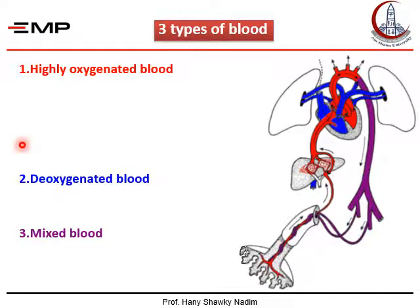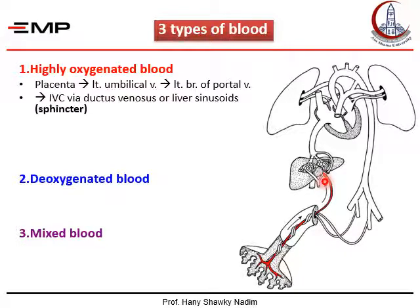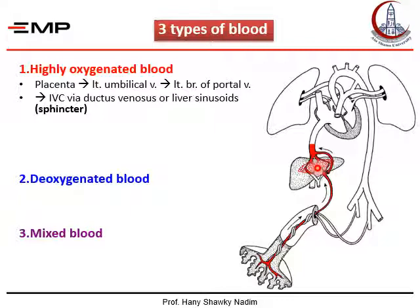Let's follow the blood in the fetal circulation. Oxygenated blood from the placenta runs through the umbilical vein to reach the left branch of the portal vein in the liver. Most of this blood passes through the ductus venosus, which is a shunt between the left branch of the portal vein and the inferior vena cava, or it may enter into the sinusoids of the liver. The ductus venosus is a shortcut, whereas running through the sinusoids takes longer. There is a sphincter at the beginning of the ductus venosus which constricts to divert blood to the sinusoids of the liver in case the pregnant woman is exposed to a blow to the abdomen or any pressure, to prevent overloading of the fetal heart. This sphincter functions to protect the growing heart.